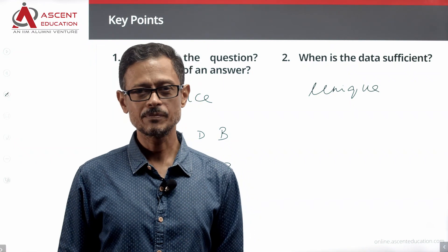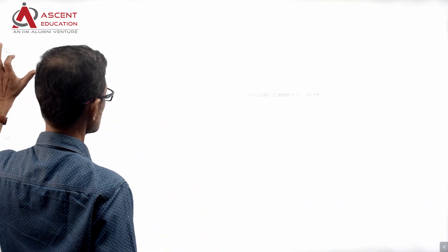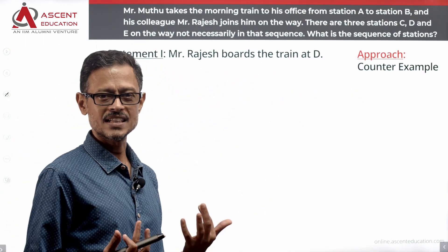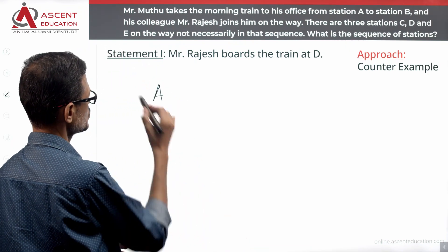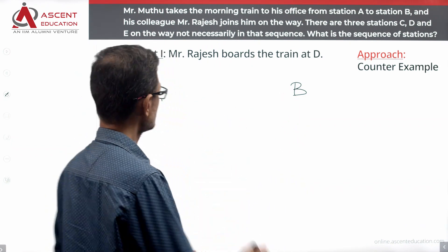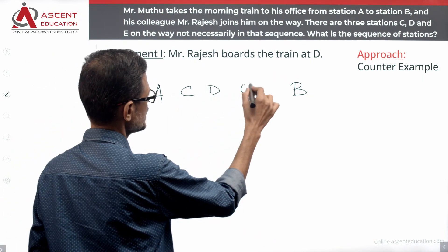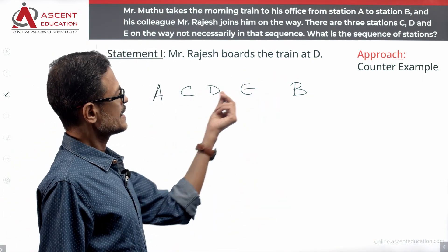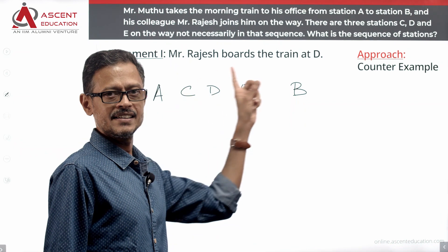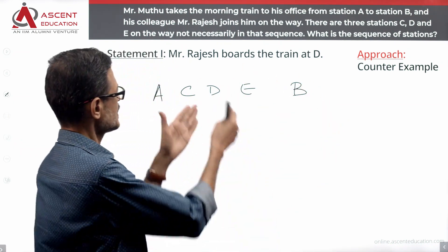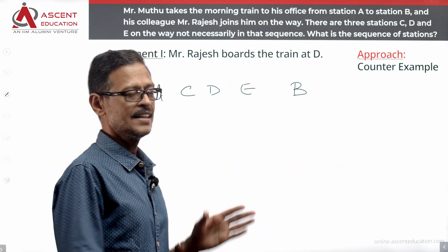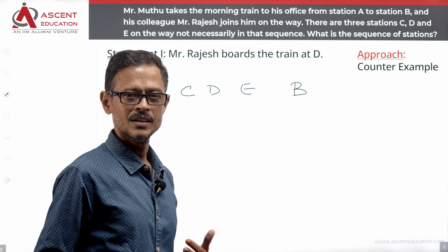Start by evaluating statement one and see whether one alone is sufficient. Statement one: Mr. Rajesh boards the train at D. Using a counter-example approach — Muthu boards at A and exits at B, Rajesh boards at D and exits at B. One possible sequence is A-C-D-E-B, where Rajesh boards at D.